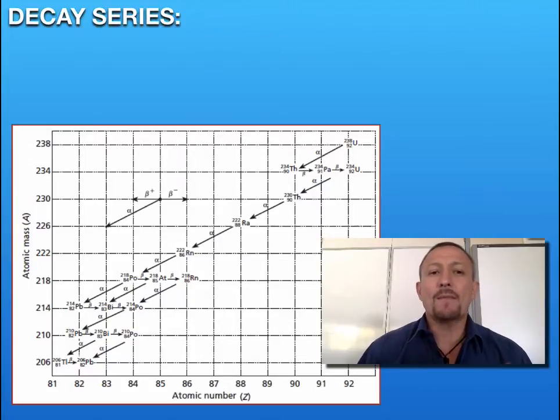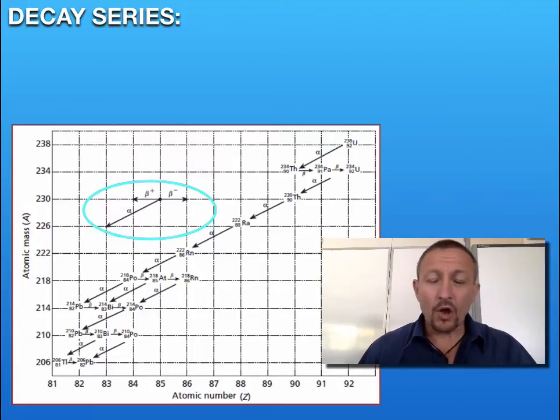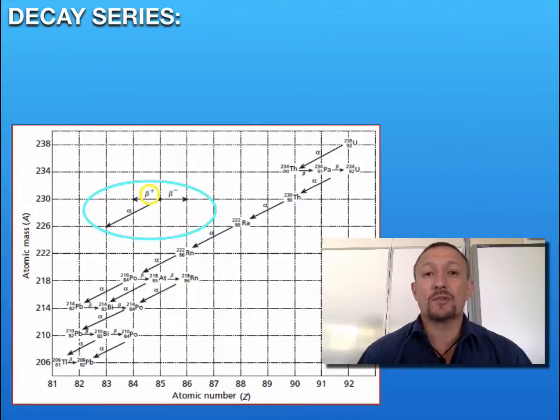We've got three particles that can be released during radioactive decay from the nucleus. On the horizontal side, we've got our positrons, which is a beta particle produced when we've got too many neutrons, so the neutron breaks down and we produce a positron. Then we've got an electron.